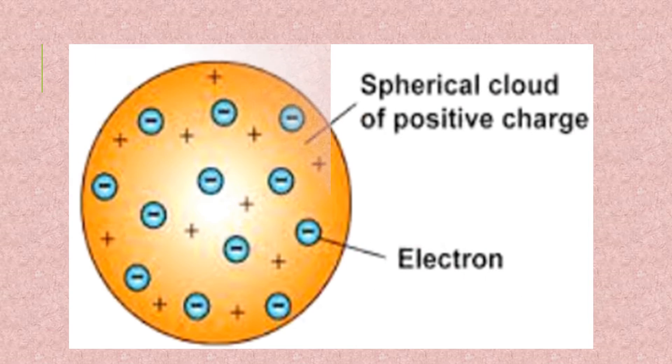Coming to the diagram, this is the Christmas pudding - even watermelon we can compare it. The black seeds are the electrons, you can see the minus sign. They are electrons, and the sphere is positive. So positive sphere in which electrons are embedded.